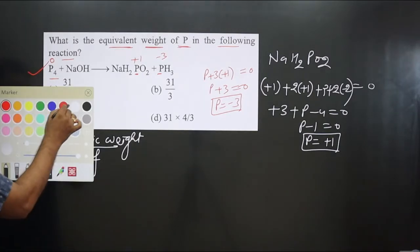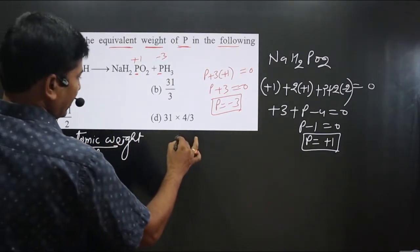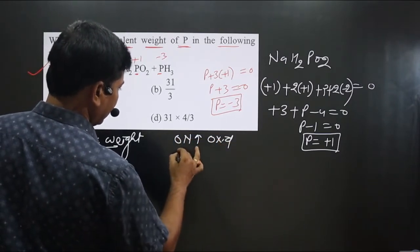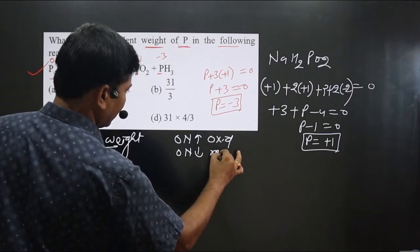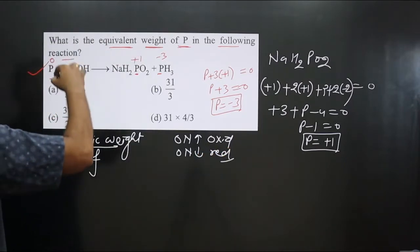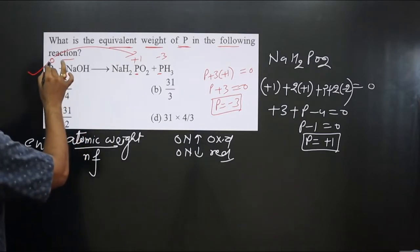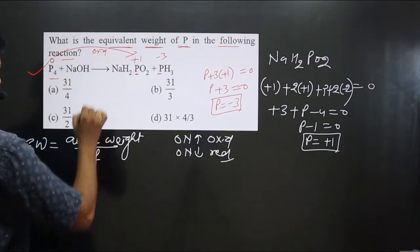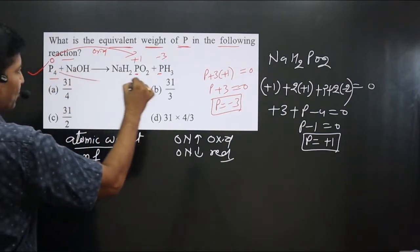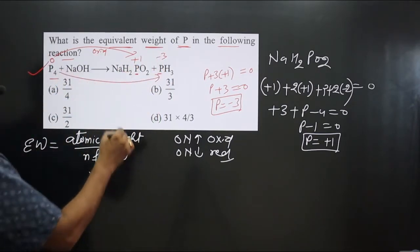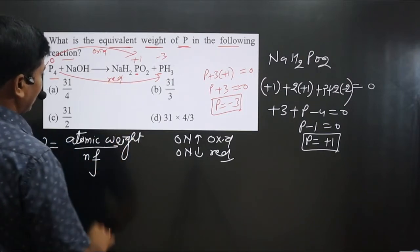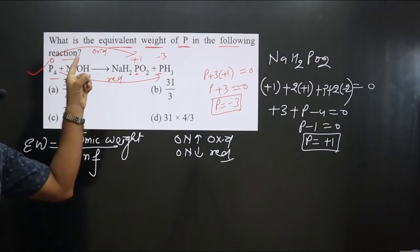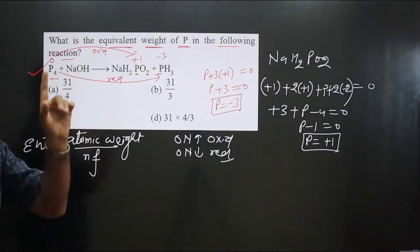Increase in oxidation number is always oxidation, and decrease in oxidation number is always reduction. Comparing: phosphorus goes from 0 to +1 — that is an increase, so this is oxidation. Phosphorus also goes from 0 to −3 — that is a decrease, so this is reduction.